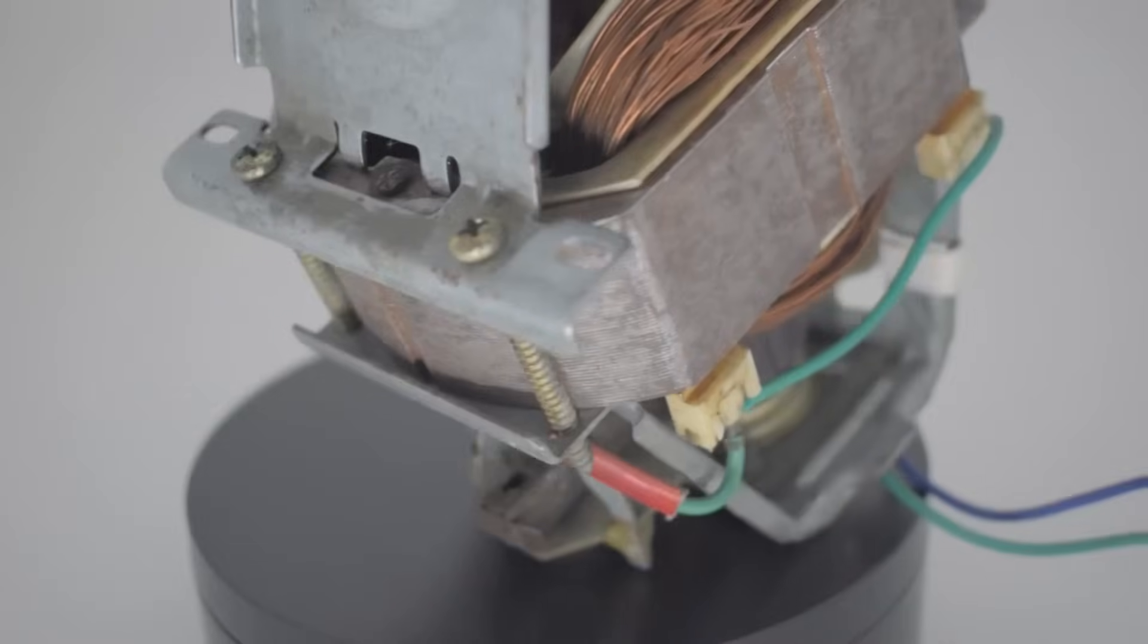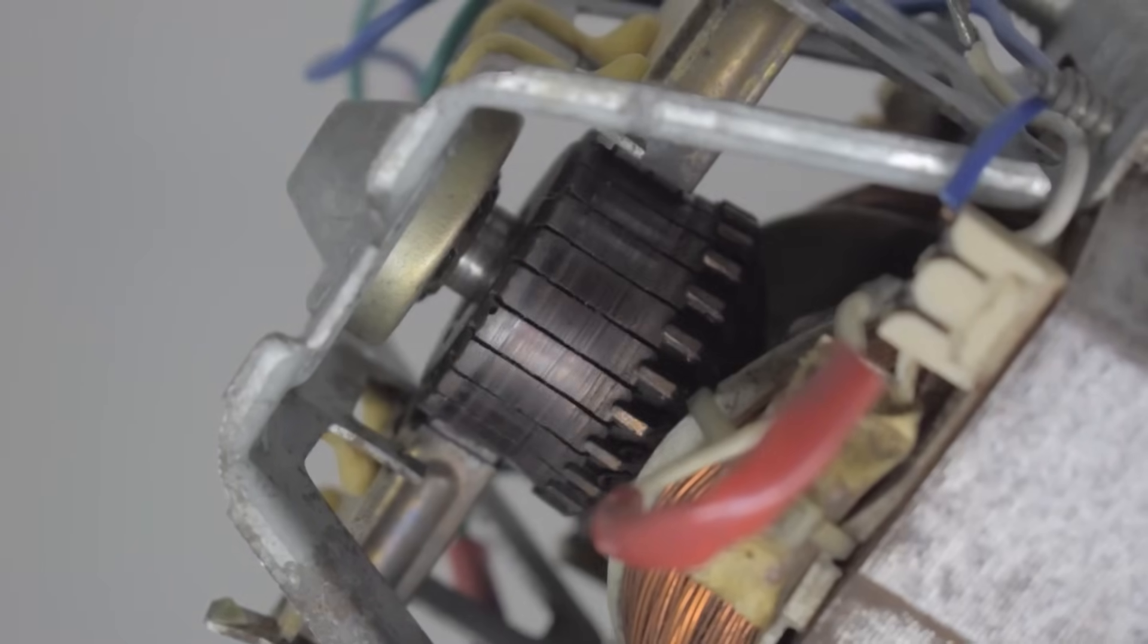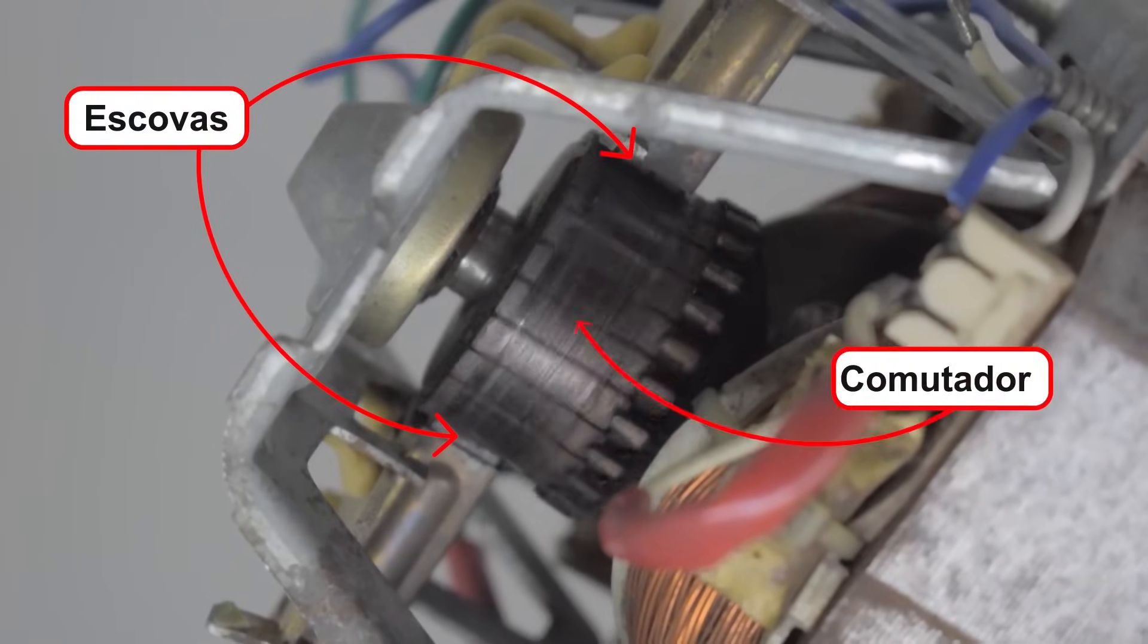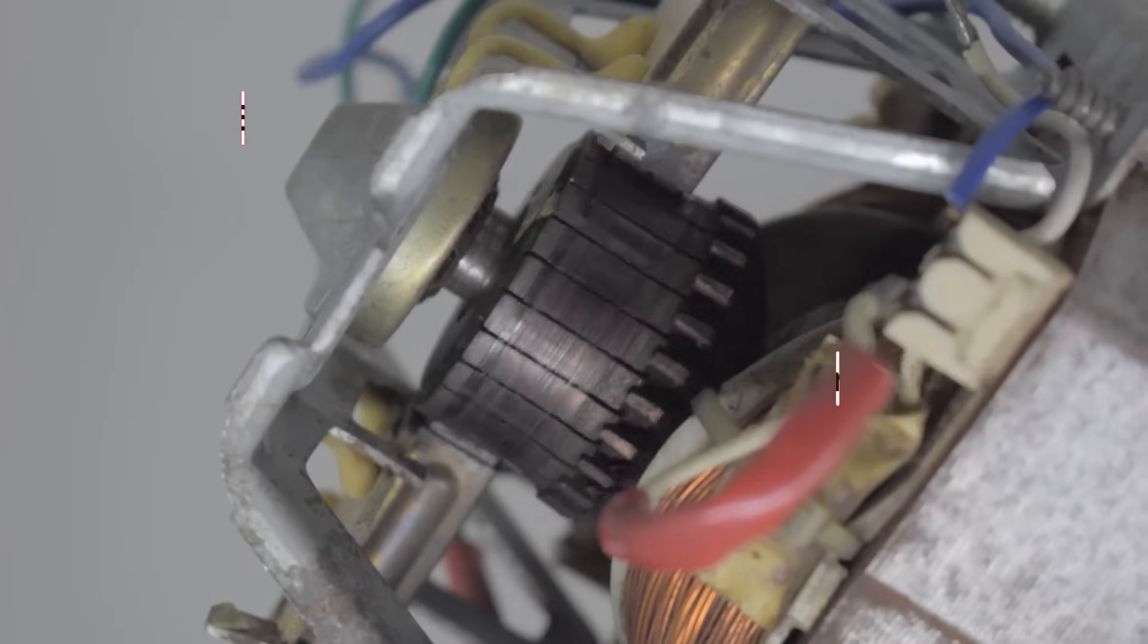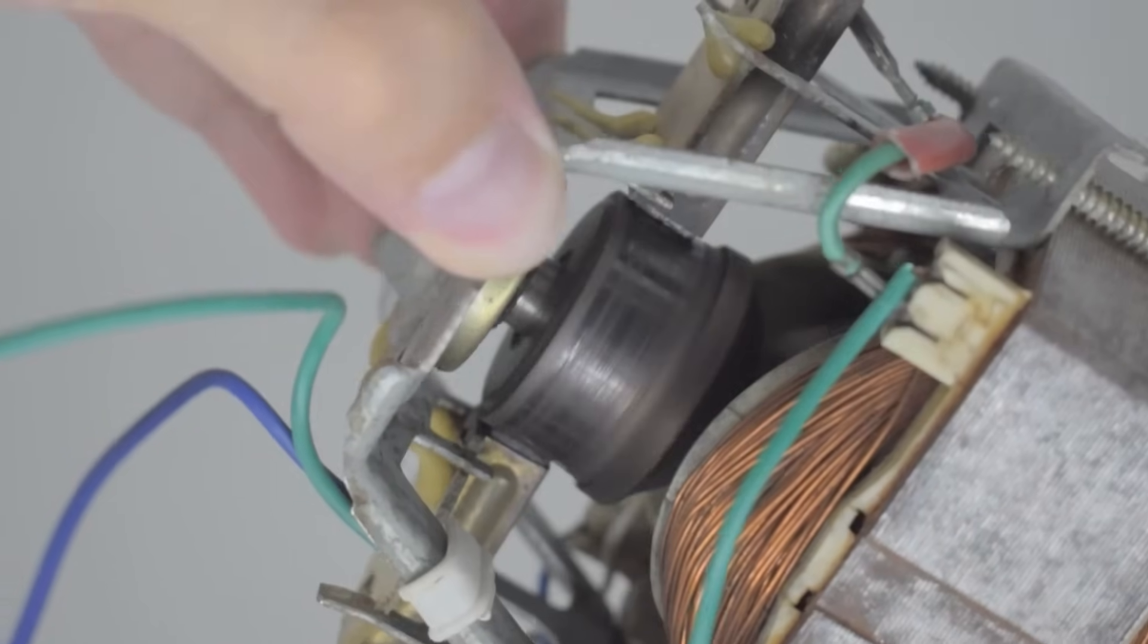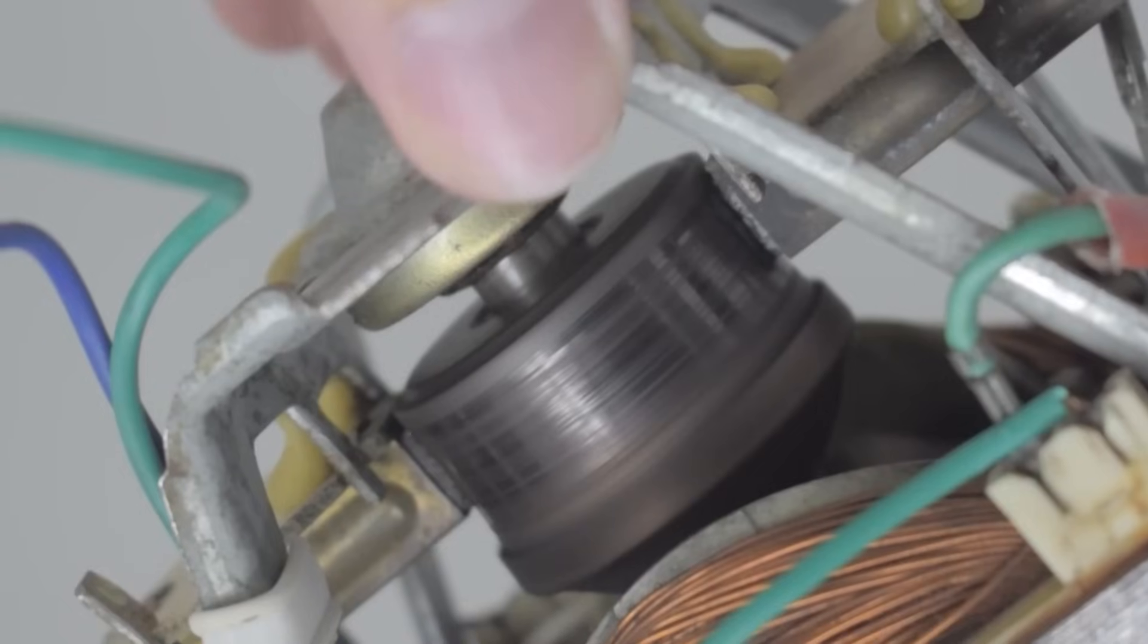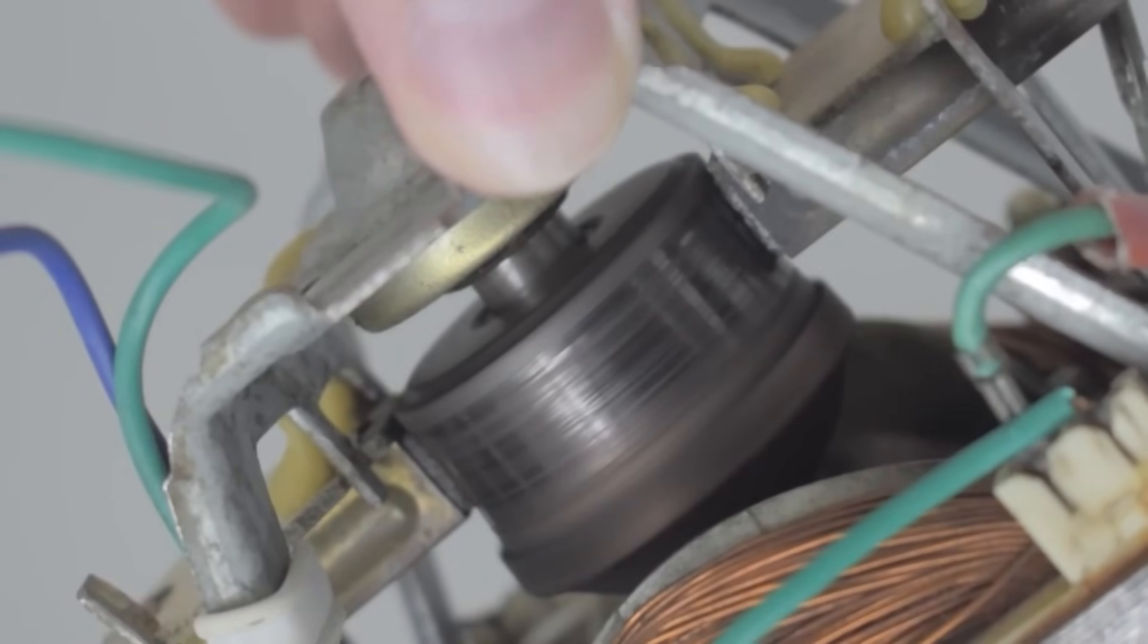For example, if we open a conventional direct current motor, we'll see these contacts that touch the main shaft, which we call brushes and also a device called a commutator, which is where these brushes touch to generate the movement of the motors. When you turn on this type of motor, the brushes make contact with the commutator and it's responsible for reversing the electrical direction of the motor's coils and that's what makes the motor spin.